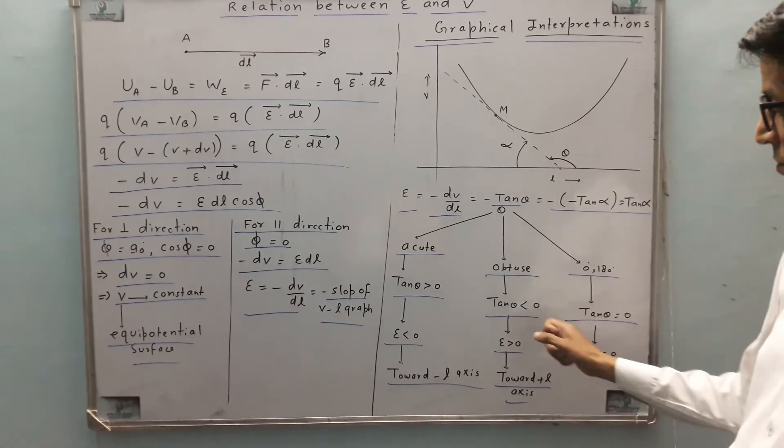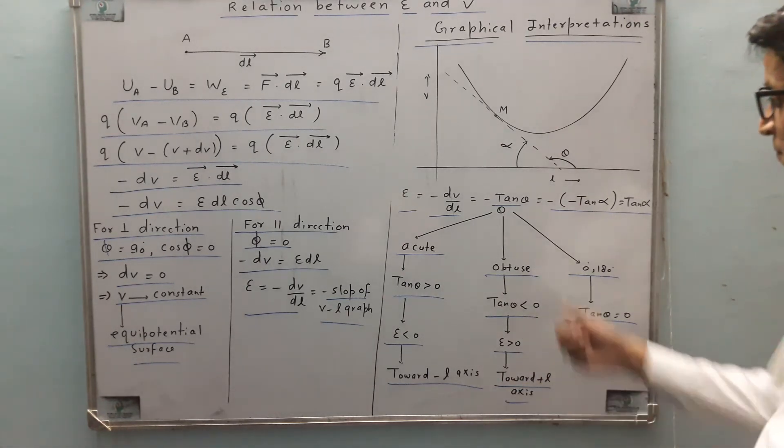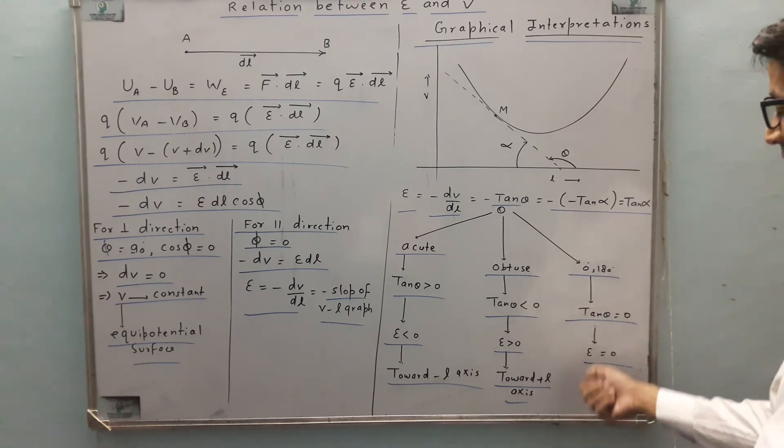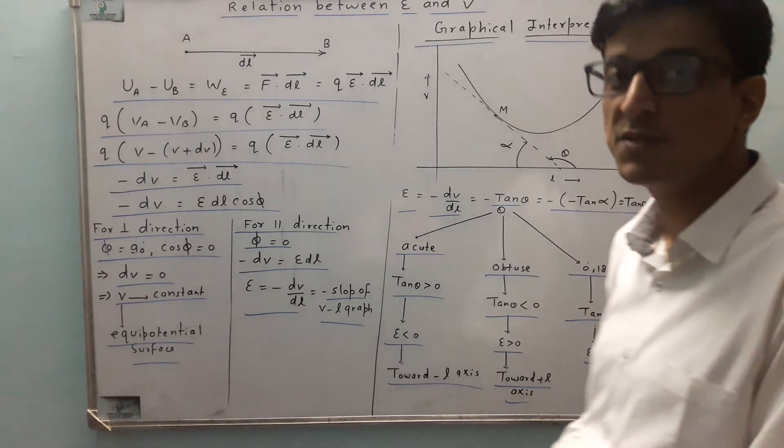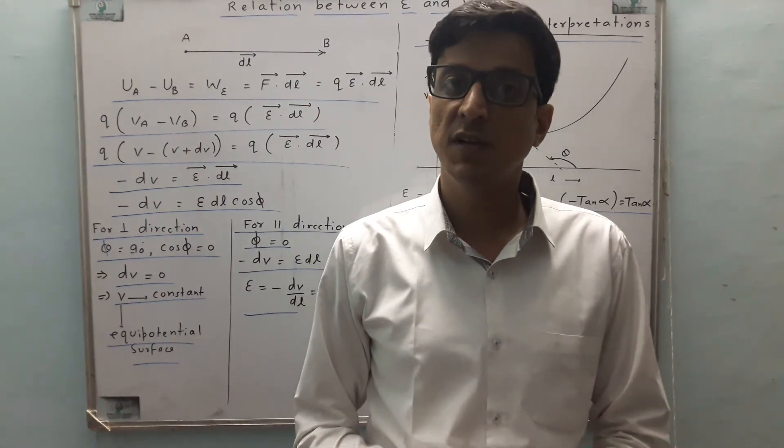If theta is obtuse, tan theta is negative, which means electric field is positive, toward the plus L axis. If theta is zero or 180 degrees, tan theta is zero, so electric field is zero. In this way you can interpret the graphical relations between electric field